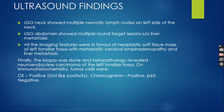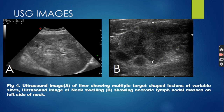Ultrasound neck showed multiple necrotic lymph nodes on the left side of the neck. USG abdomen showed multiple round target lesions suggestive of liver metastasis. All the imaging features were in favor of a neoplastic soft tissue mass of the left tonsillar fossa with metastatic cervical lymphadenopathy and liver metastasis. Finally, biopsy was done and histopathology revealed neuroendocrine carcinoma of the left tonsillar fossa. On immunohistochemistry, tumour cells were CK-positive with dot-like positivity, chromogranin positive, and P63 negative. The ultrasound images showed the liver with multiple target-shaped lesions of variable sizes scattered throughout, suggestive of liver metastasis, and a necrotic lymph nodal mass on the left side of the neck.